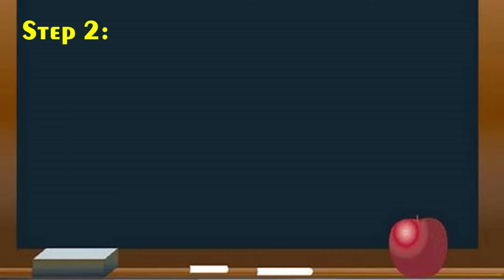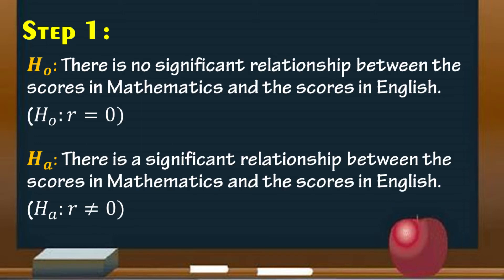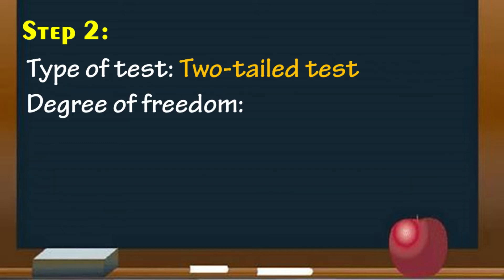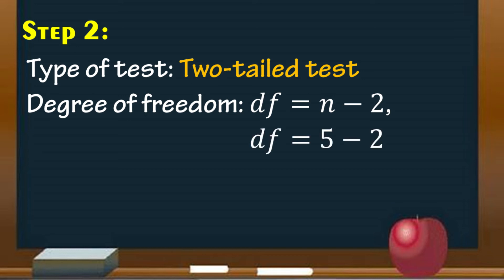Step number two: identify the type of test. To do that, look at the alternative hypothesis — it uses the symbol 'not equal to,' therefore it is two-tailed. Next, identify the degree of freedom. The degree of freedom is equal to N minus 2. Since N is equal to 5, therefore the degree of freedom is equal to 3.